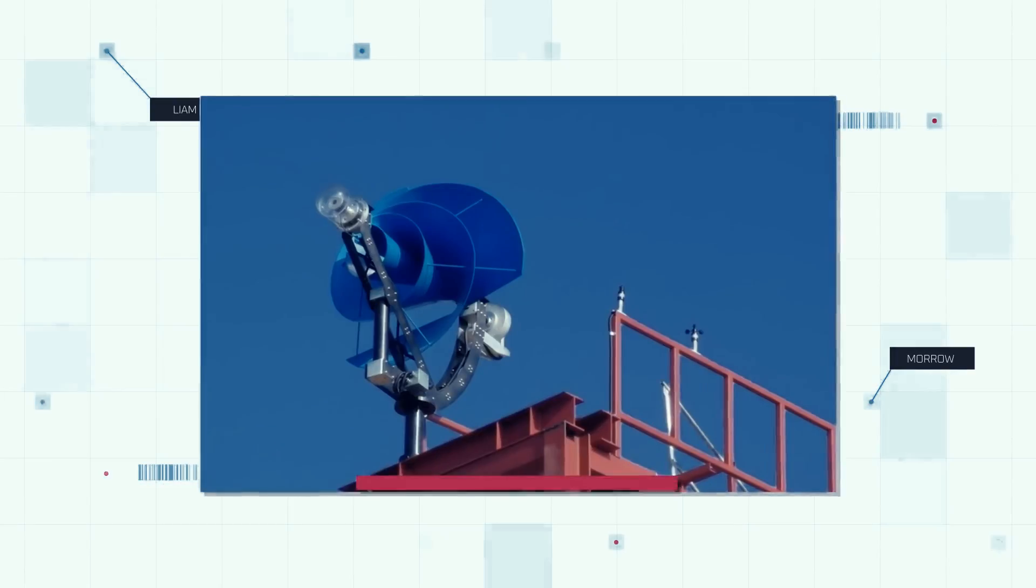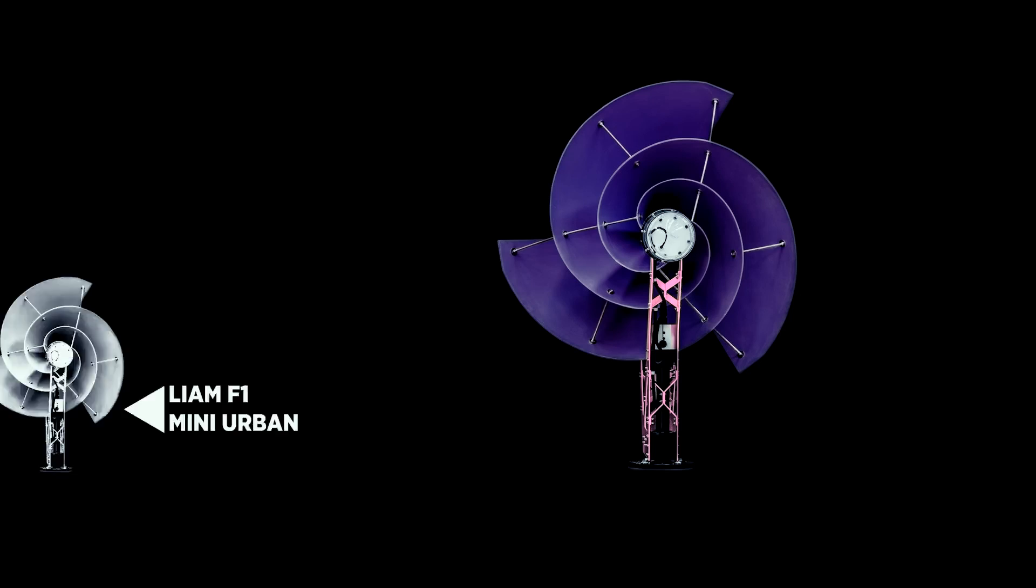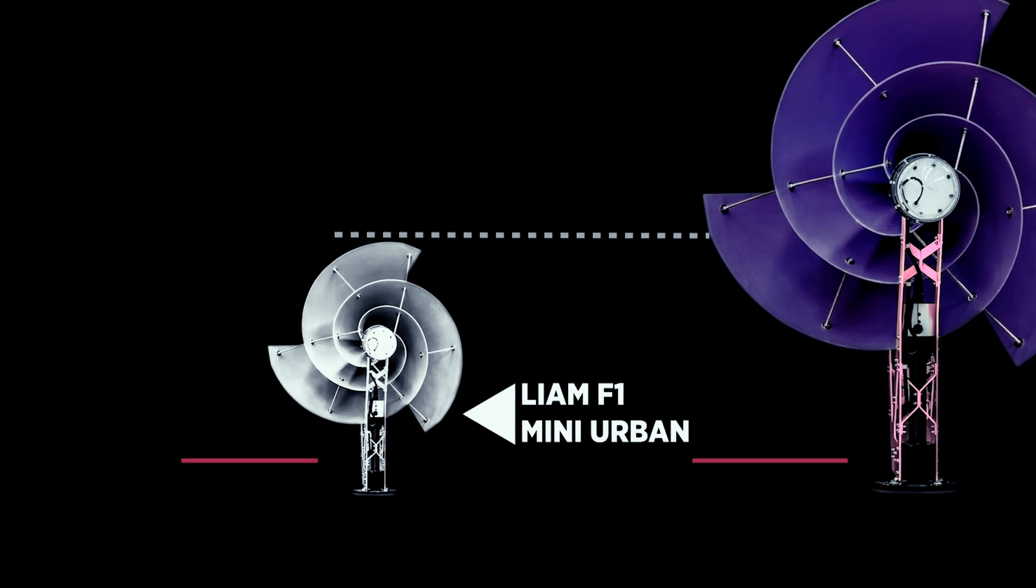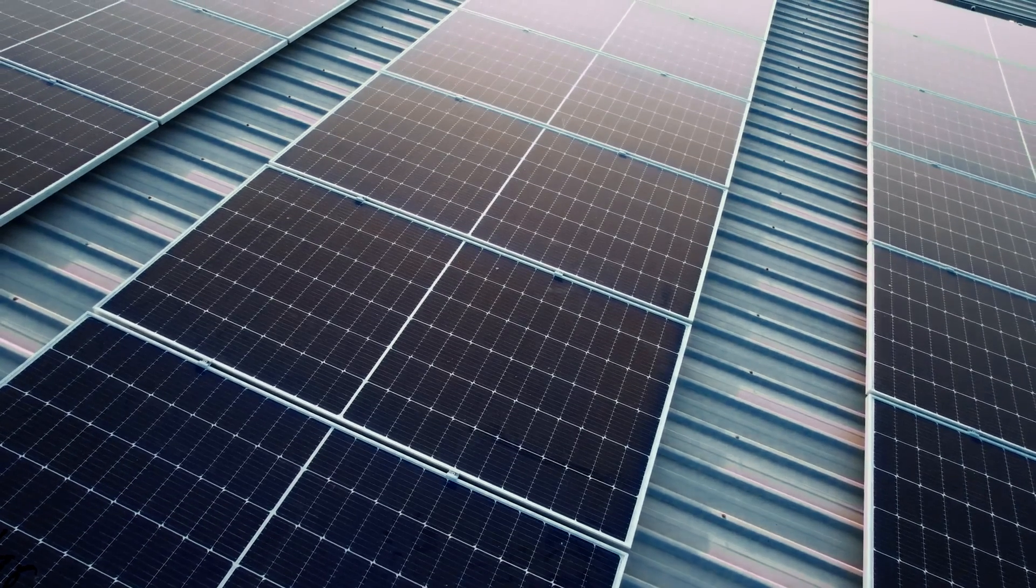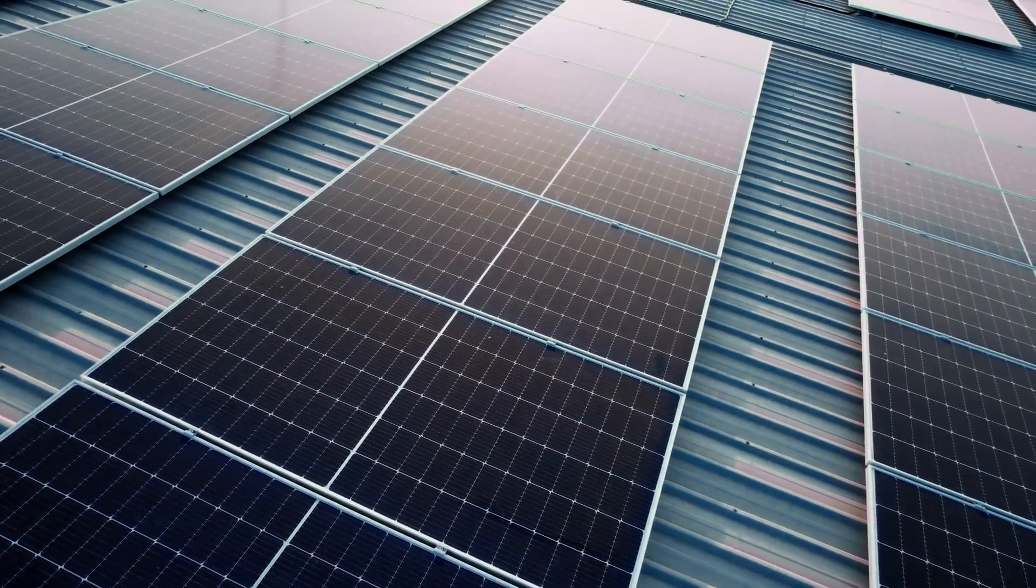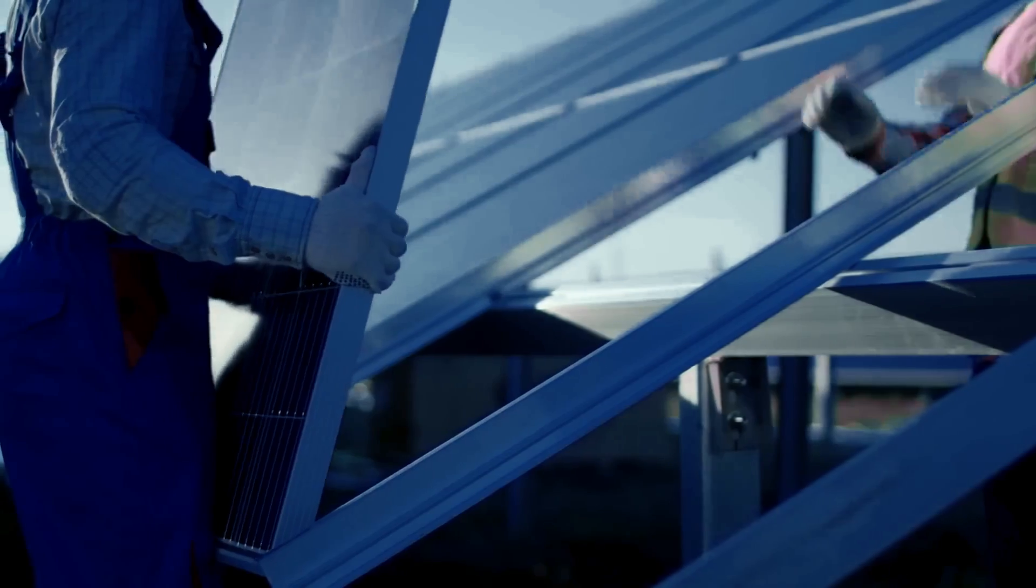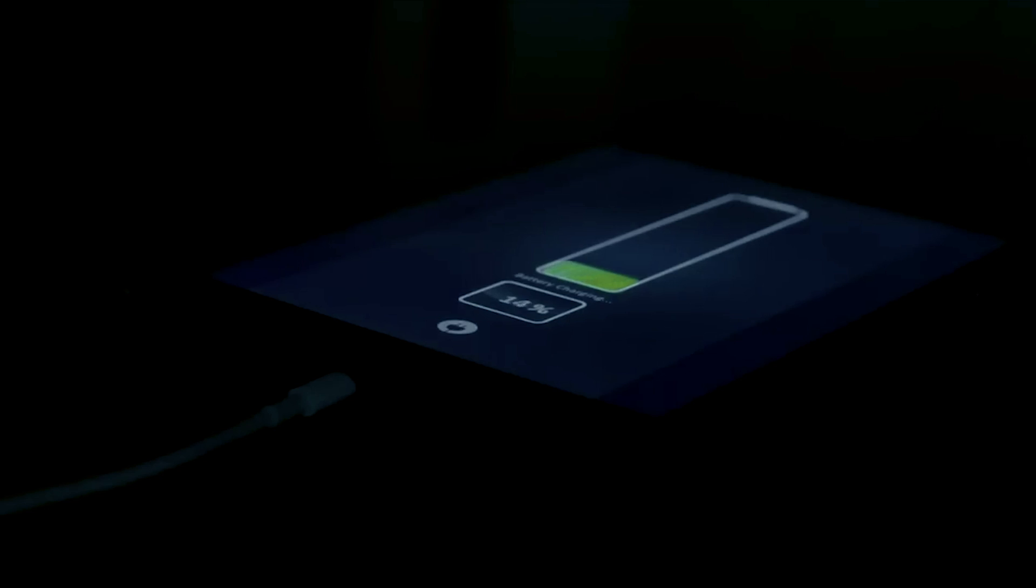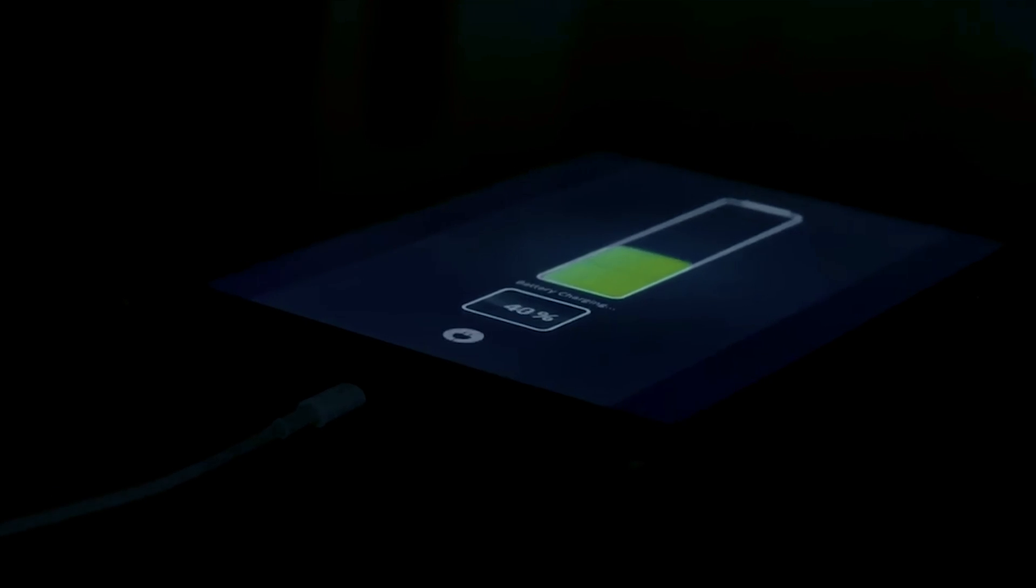Scalability. But the versatility doesn't stop there. The Liam F1 can be scaled down to power street lights and LED signs, a feat that smaller solar panels struggle to achieve. This scalability opens up a new realm of possibilities for efficient, small-scale energy solutions.